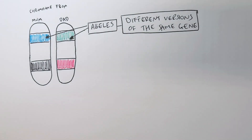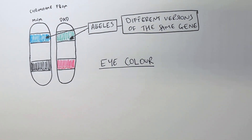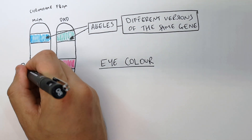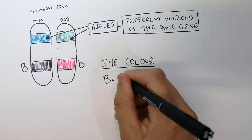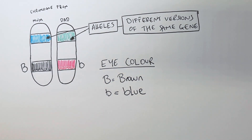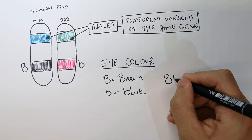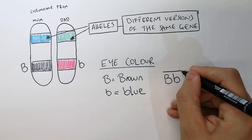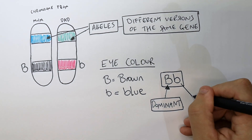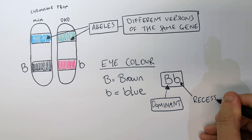We're going to be looking at the inheritance of eye colour. Mum has the gene for brown eyes and dad has the gene for blue eyes. Big B is brown, little B is blue. The child is going to have big B, little B alleles.